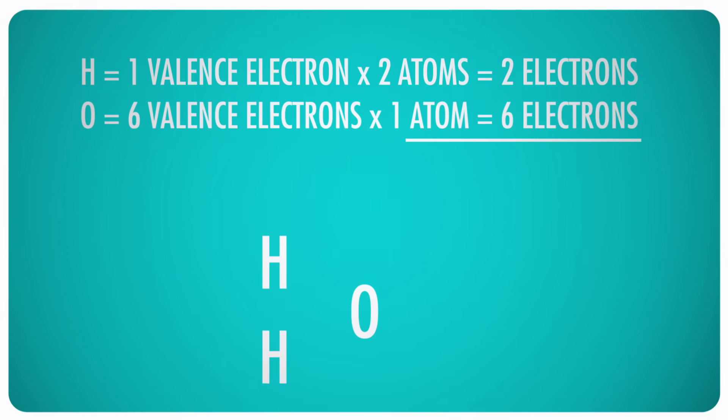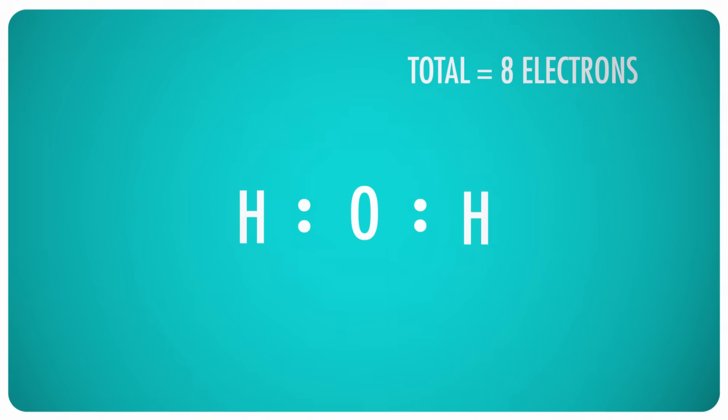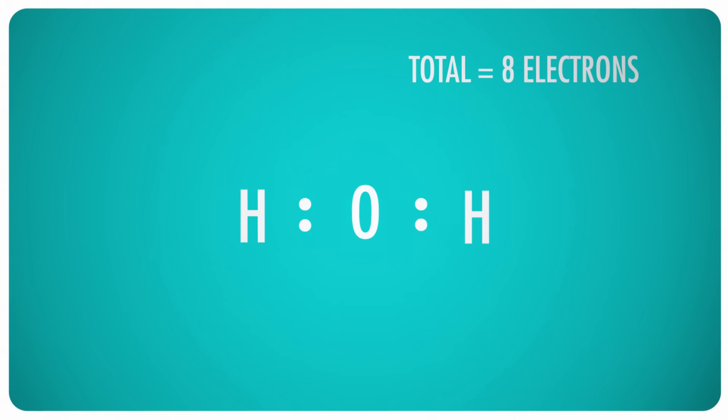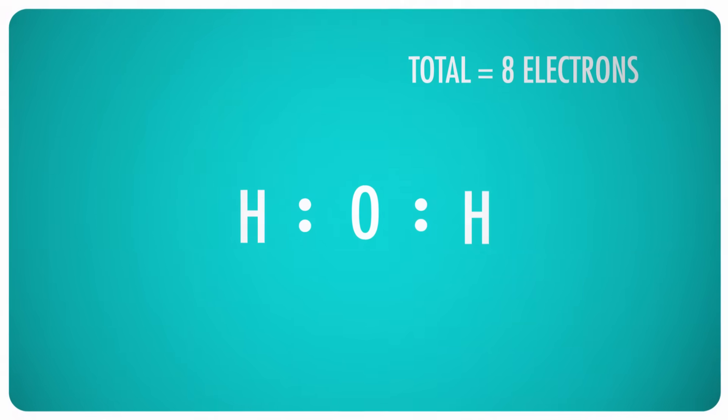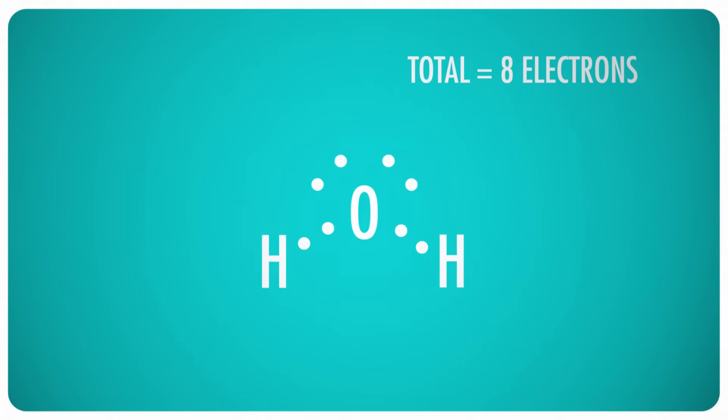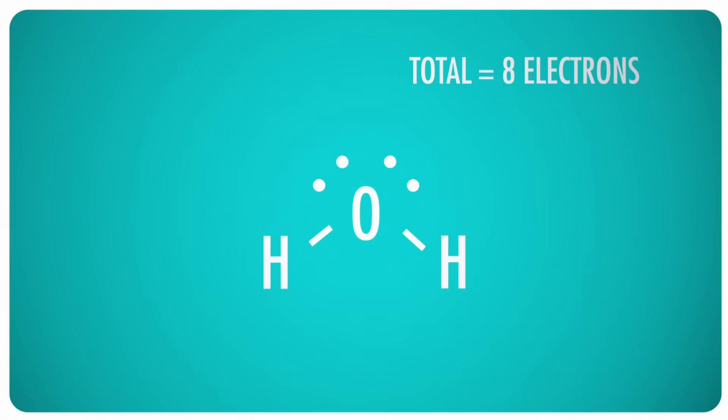Covalent bonds are a little more complicated, and it works best if you follow some specific steps. Let's try it with water. First, figure out how many total valence electrons are available: each hydrogen has one and oxygen has six, for a total of eight. Both hydrogens bond to oxygen, so put oxygen in the middle. Each bond requires a pair of electrons, so we use four of the eight available electrons to form the bonds. Hydrogen atoms only need two electrons total, so they're already full. Oxygen needs an octet, so place the remaining electrons around it in pairs. Lewis structures use lines to represent covalent bonds, so replace the bonding electrons with lines — and you have it. Water contains two covalent bonds and two lone pairs.